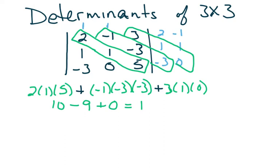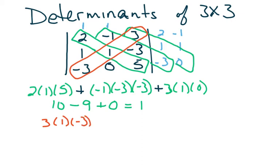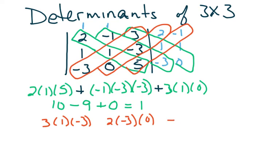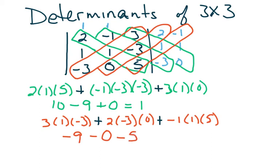However, remember what we did before — we also had diagonals going the other direction. We have that same situation here. Here is a diagonal with three numbers, so we multiply those together: 3 times 1 times negative 3. Here's another diagonal with three numbers: 2 times negative 3 times 0. And then a third diagonal: negative 1 times 1 times 5. Because those are all going the same direction, we add those together. Simplifying: we have negative 9 minus 0 minus 5, which ends up being negative 14.